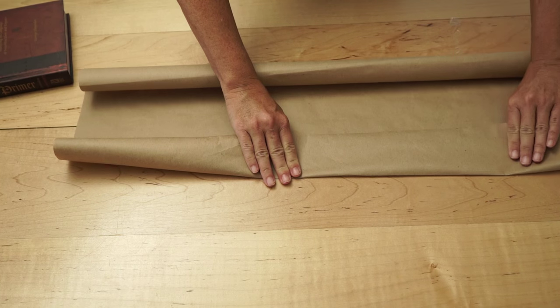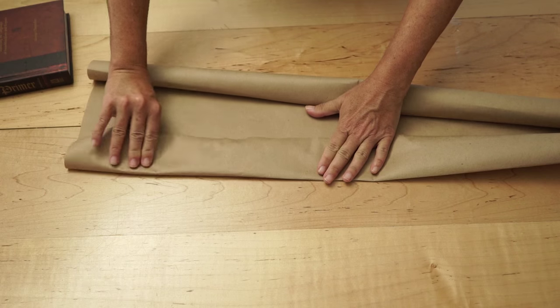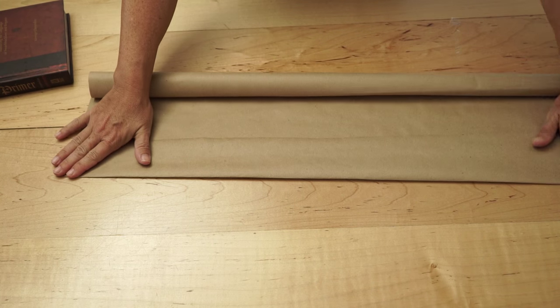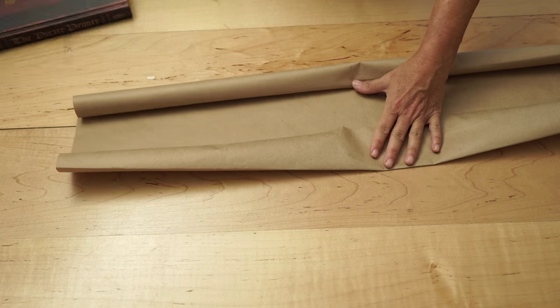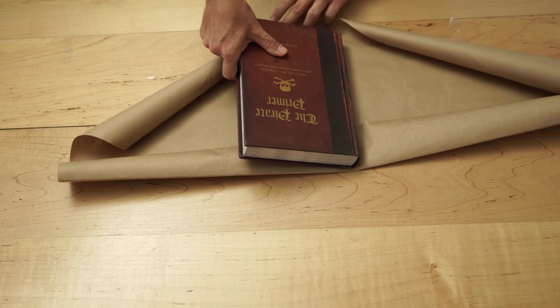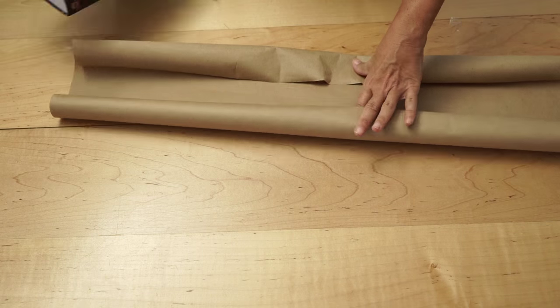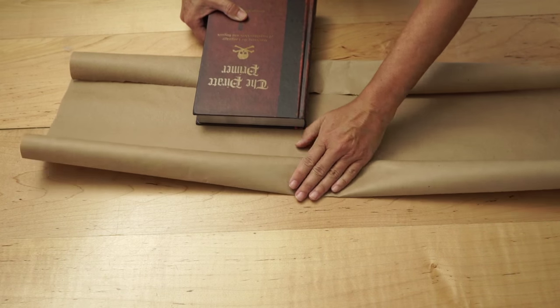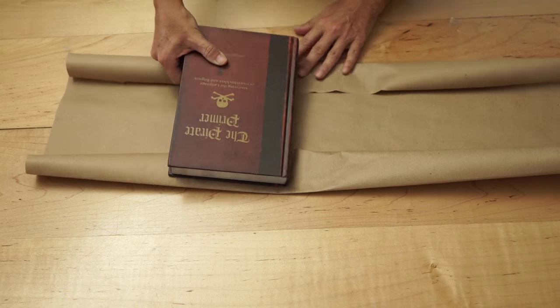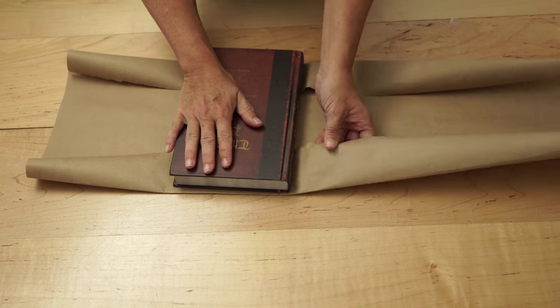Do the same to the other side, then put the book on top of the crease marks in the middle of the paper. The paper should now be the same exact size as your book.